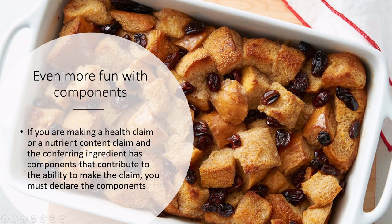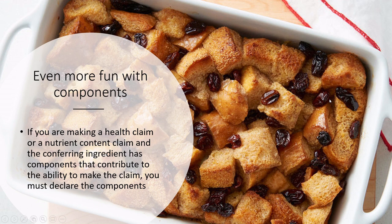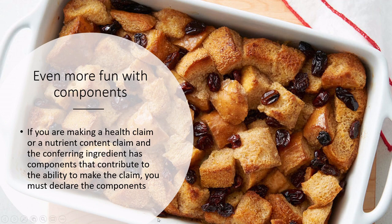Here's an important example with bread pudding. Bread is commonly made with enriched wheat flour containing added vitamins and minerals. If you decide to make a health claim — such as 'excellent source of folate' — because the bread in your recipe is fortified with folate, the exemption no longer applies. All component labeling exemptions are removed when a health claim is made, because you would effectively be burying where that health claim came from.